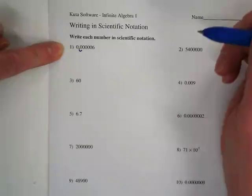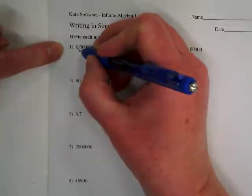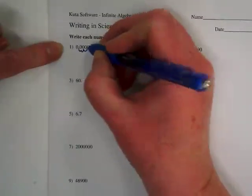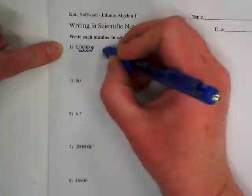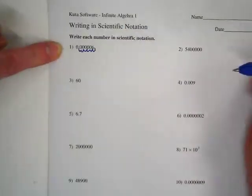We're going from scientific notation. We have to go 1, 2, 3, 4, 5, 6, because I need to get that 6 to the left of the decimal point.